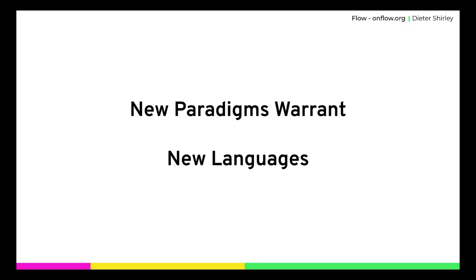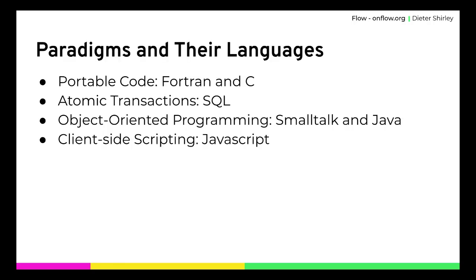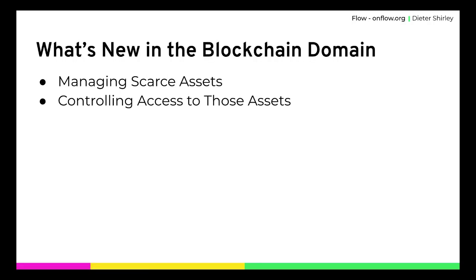Whenever we saw these new paradigms become important, we saw new languages develop. For portable code, languages like Fortran and C. For relational databases and atomic transactions, SQL. Object-oriented programming led to Smalltalk and Java. Client-side scripting is all built around JavaScript. And so when we look at software moving into the blockchain, we're talking about a new domain — so what's different about it?